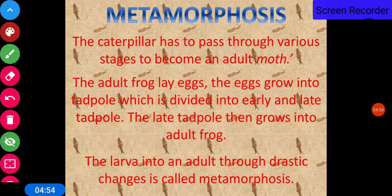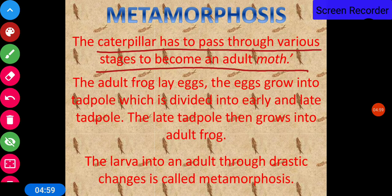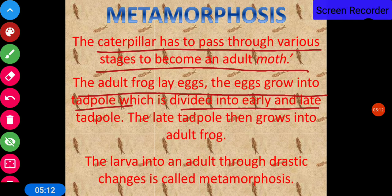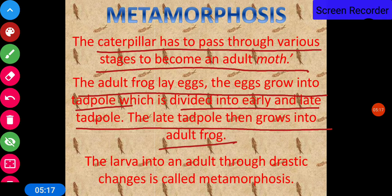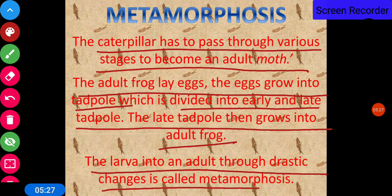Metamorphosis: the caterpillar has to pass through various stages to become an adult moth, as studied in the previous chapter. The adult frog lays eggs, which grow into tadpoles that divide into early and late tadpoles. The late tadpoles then grow into adults. The transformation from larva into an adult through such drastic changes is called metamorphosis.